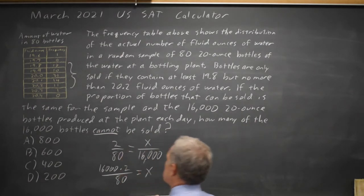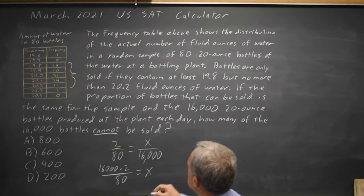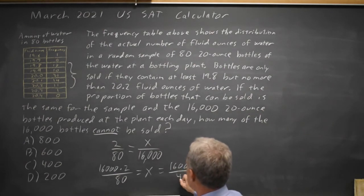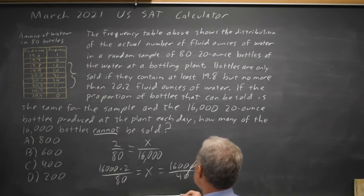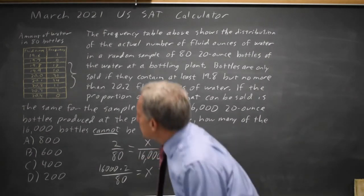Which is 16,000 over 40, which is 1,600 over 4, which is 400 bottles total cannot be sold.